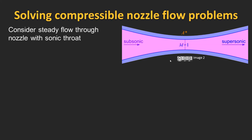Now we have a reasonable understanding of how area changes affect compressible flows, but how do we actually solve compressible nozzle flow problems? For example, let's say that I have a converging-diverging nozzle where the flow at the area minimum is sonic. This area minimum is also known as the throat. Now if I know the exit area of the nozzle, how do I compute the exit Mach number? In order to do this, we need to relate the flow at any point in the nozzle, where the Mach number is m, to the critical state, where the Mach number is 1.